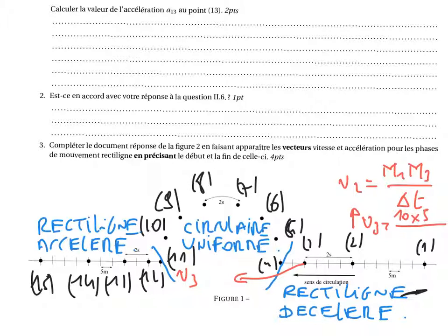En combien de temps ? Entre deux points consécutifs, il s'est écoulé 2 secondes. Donc 2 secondes entre le point 1 et le point 2, et 2 secondes entre le point 2 et le point 3, c'est-à-dire 4 secondes en tout entre le point 1 et le point 3, donc divisé par 4. On en déduit V2 égale 12,5 mètres par seconde.